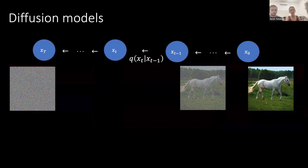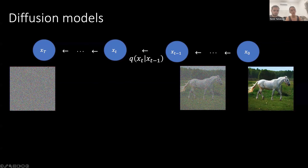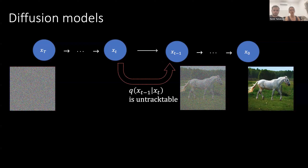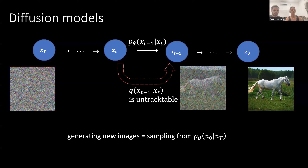Let's have a quick recap on diffusion models. We talk about a forward process and a backward process, where the forward process is basically taking a clean image x0 and noising it according to some known noising schedule. The hard part is to start with Gaussian noise and turn it into a clean image that looks realistic. The problem is that this reverse distribution is intractable, so what we do is train the diffusion model to approximate this reverse distribution, and then to generate new images we sample from this learned distribution.